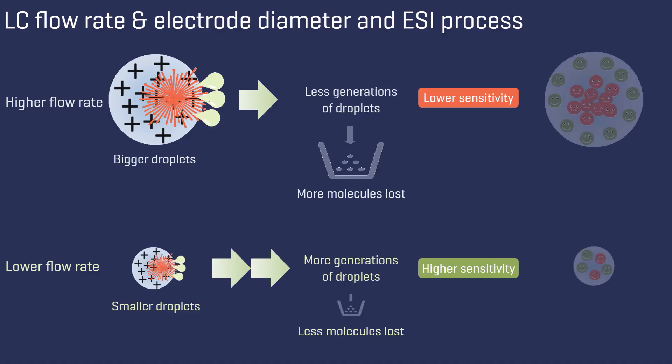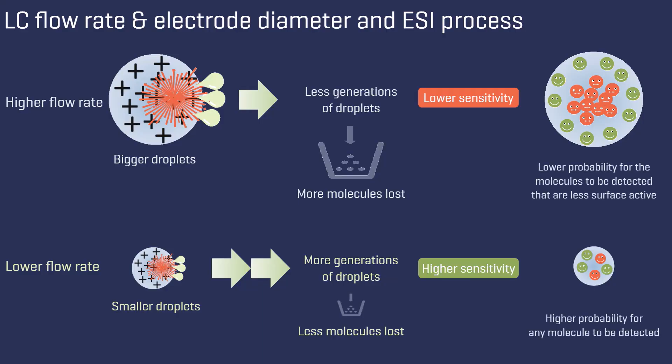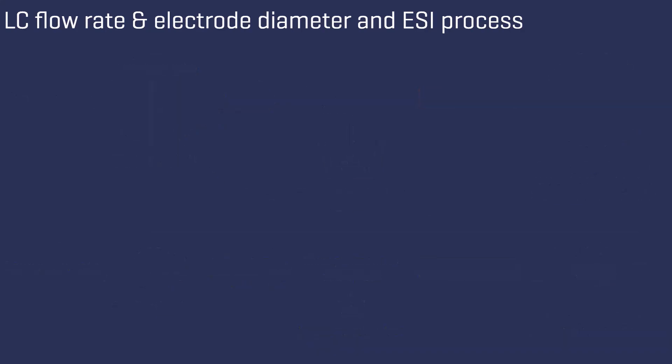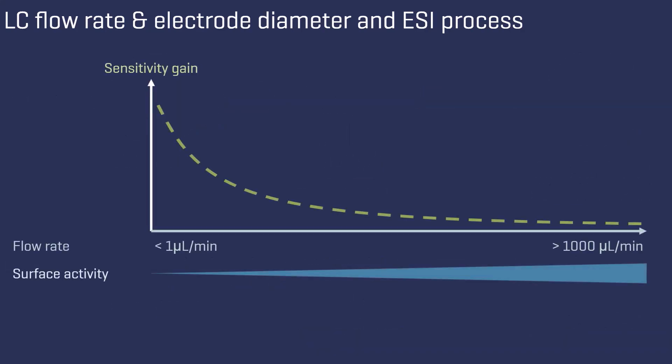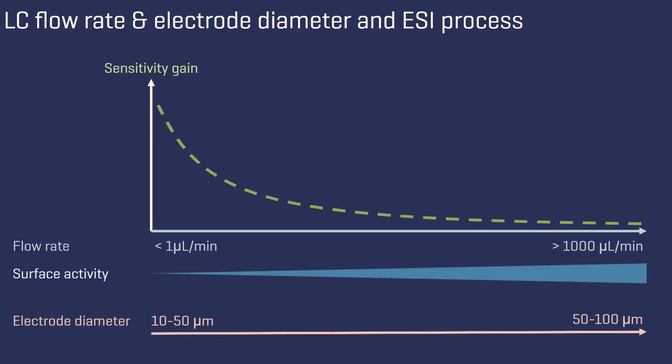Furthermore, you can obtain better sensitivity for those molecules that, due to their molecular properties, tend to be at the center of larger droplets. For smaller droplets, the relative surface area is greater, and thus the probability for any molecule to be at the surface. The described effects become more pronounced the smaller the flow rate gets. Note that a flow rate below a critical threshold requires the use of an electrode with a smaller inner diameter to achieve the field strength necessary for the formation of a Taylor cone, and thus the start of the electrospray process.